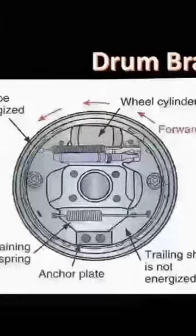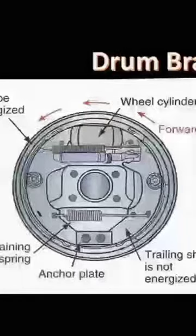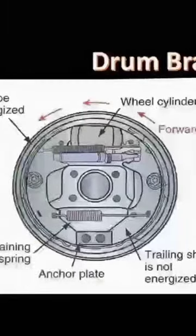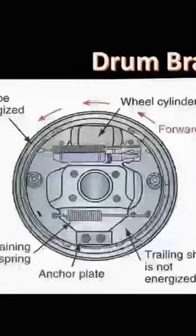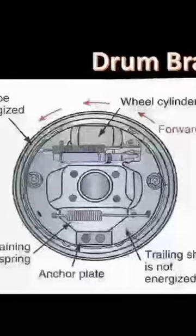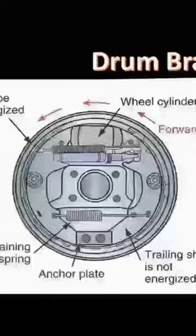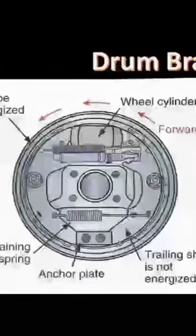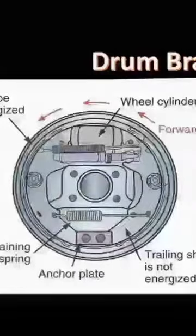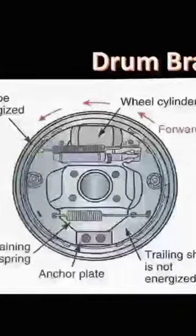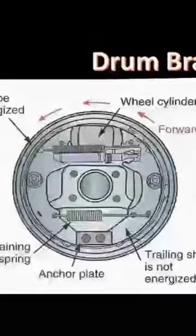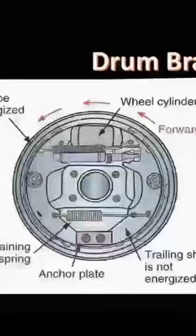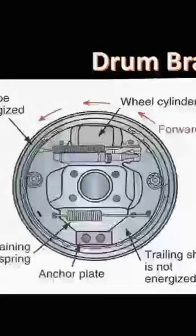In a leading-trailing type brake, more of the braking force is from the leading shoe during a forward stop, and more of the braking force is from the trailing shoe during a reverse stop.